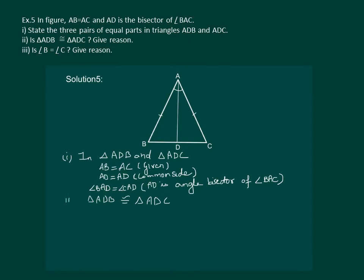The third part asks: is angle B equal to angle C? Since the two triangles are congruent by SAS property, we have angle B = angle C as these are corresponding parts of the congruent triangles.